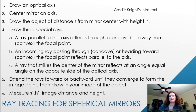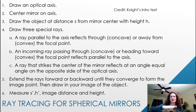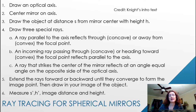Next, draw a ray that strikes the center of the mirror and reflects at an equal angle on the opposite side of the optical axis — angle of incidence equals angle of reflection. Those are your three special rays. We'll work an example problem shortly, which will make this much easier to understand.